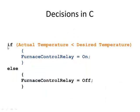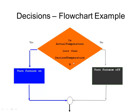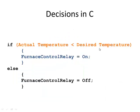Here's how that decision looks in C. We start out with an if statement. Then we have a condition always put in parentheses. If actual temperature is less than desired temperature, just like here, if it is, then we do this. This is what we call the true clause or the yes clause. If the answer to that is yes, we're going to do this, so furnace control relay gets the value on. If that condition is false, we skip over the yes clause or the true clause, and we go down to the else clause.